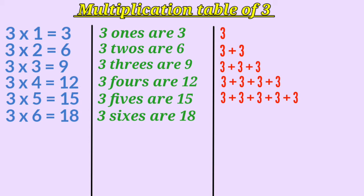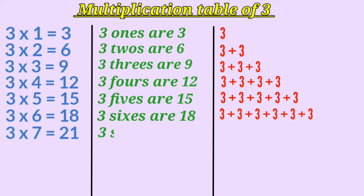How many times are we adding 3 here? That's right, we are adding 3 six times. 3 multiplied by 7 is 21, or 3 sevens are 21. Here we are adding 3 seven times.